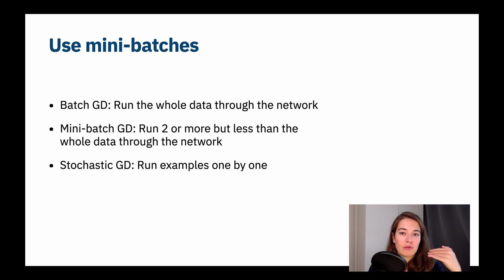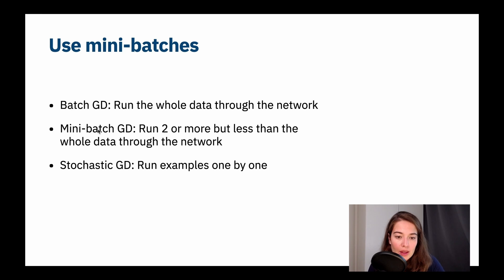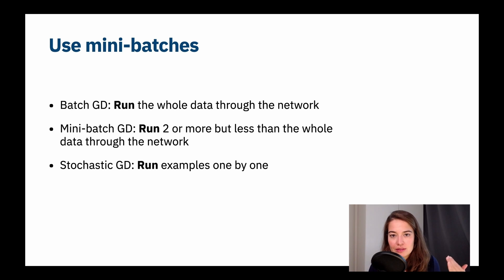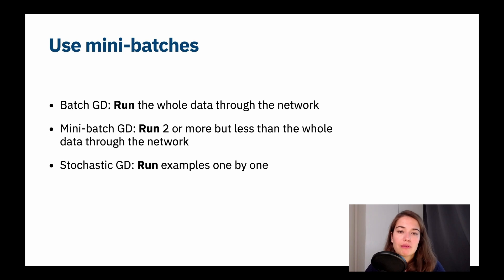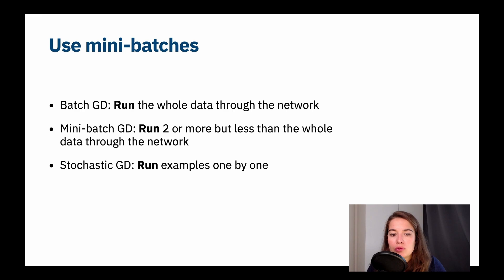With stochastic gradient descent, you run examples one by one, so your mini-batch size equals one. I said 'run examples through the network' — let's look into that. We touched on this in the hyperparameters lesson, but it can't hurt to reiterate.